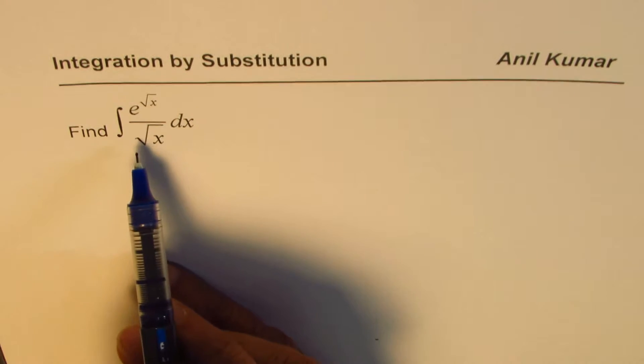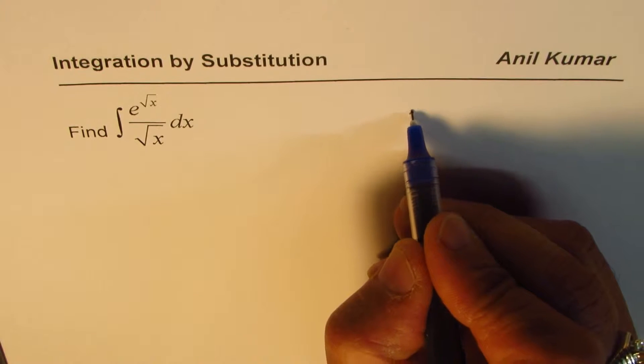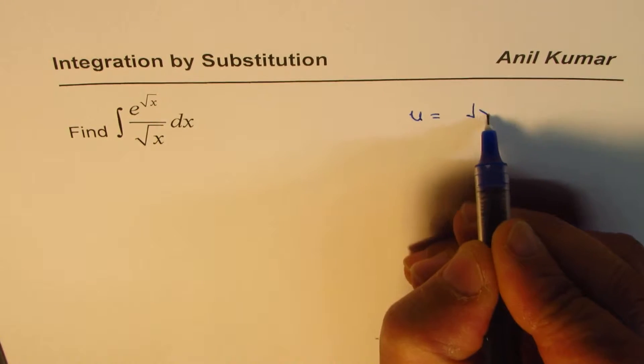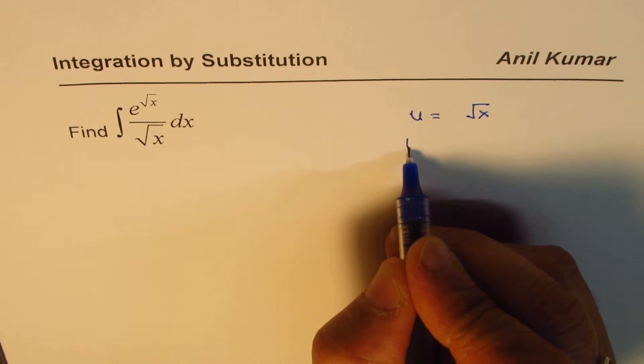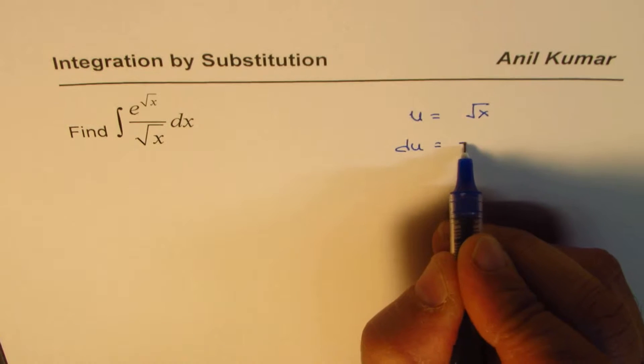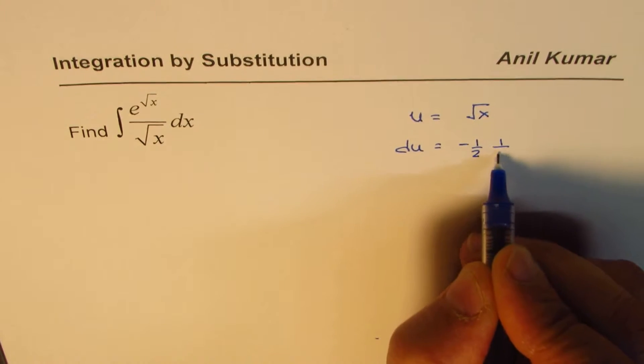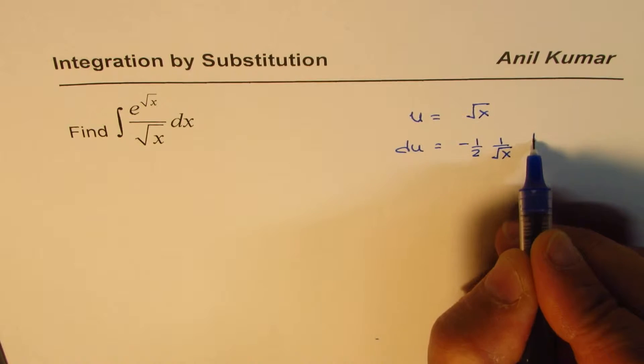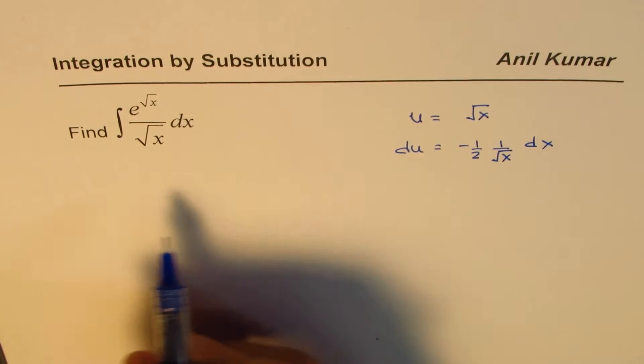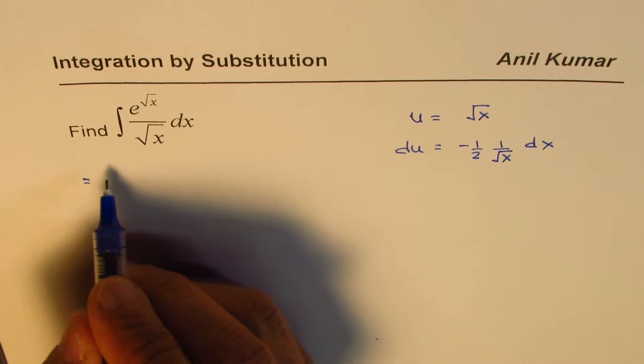So we could actually work it out. If I substitute u equals to square root of x, then du will be equals to minus half 1 over square root x dx. Now what we have here is, let me rewrite this.